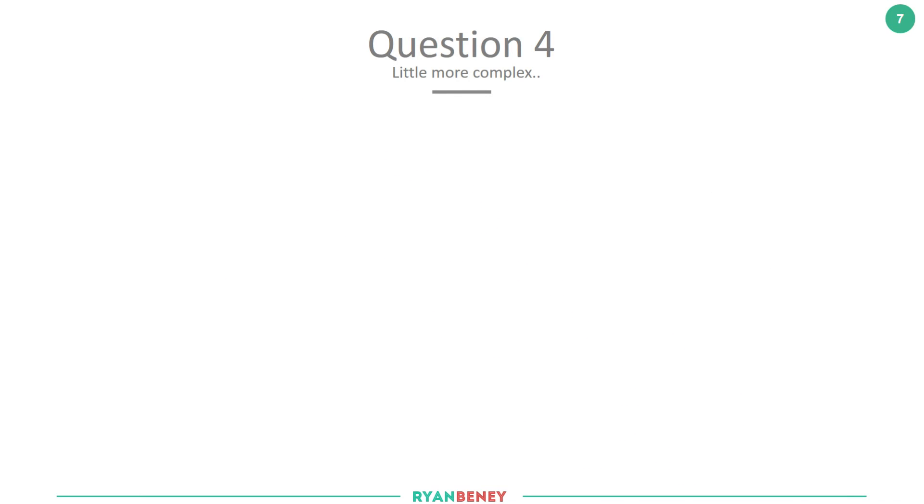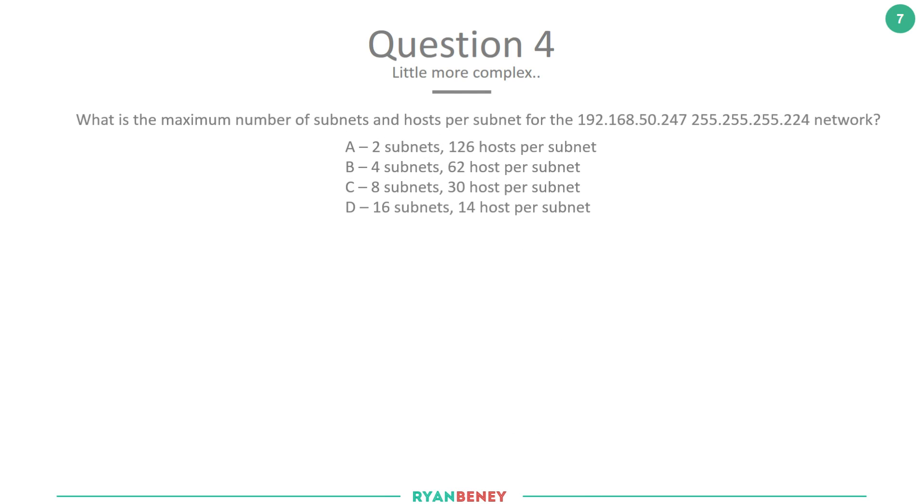Question 4: I'm going to step up a little now. What is the maximum number of subnets and hosts per subnet for the 192.168.50.247 network with subnet mask 255.255.255.224? Options are A: 2 subnets, 126 hosts per subnet; B: 4 subnets, 64 hosts per subnet; C: 8 subnets, 30 hosts per subnet; or D: 16 subnets, 14 hosts per subnet. Pause the video and when you think you have the answer, unpause and we'll go through it together.